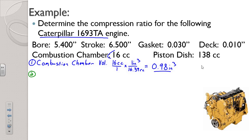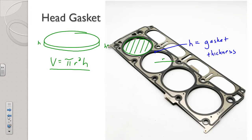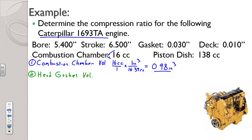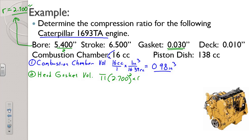Our second volume, right below, is our head gasket. The head gasket is a volume — like a short little cylinder, a slab of baloney — pi r squared times height. Our bore is 5.4 inches, so our radius is 2.700 inches. Pi times 2.700 squared, multiplied by the gasket thickness of 30 thousandths, gives us a gasket volume of 0.69 cubic inches.